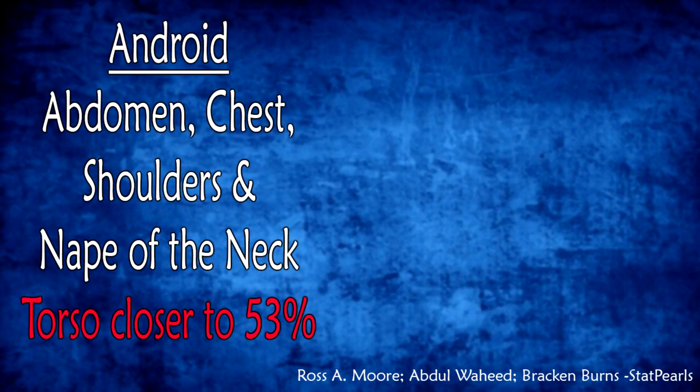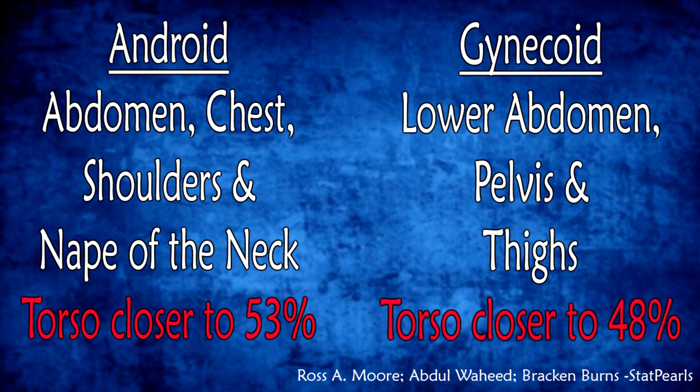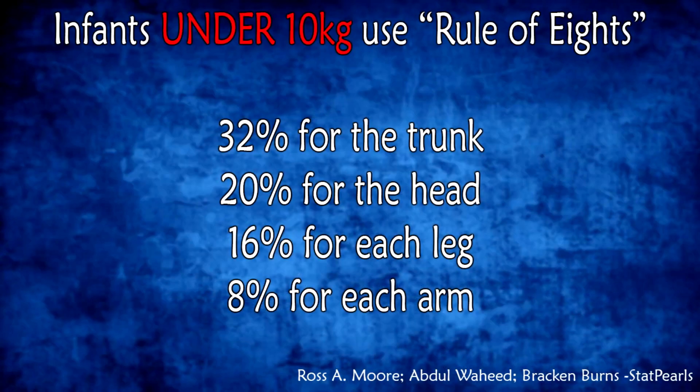Android-shaped obese patients, who distribute their adipose tissue in their abdomen, chest, shoulders, and the nape of the neck, have a torso closer to 53%, whereas gynecoid-shaped patients, who distribute their adipose tissue in the lower abdomen, pelvis, and thighs, have a torso closer to 48%. In infants that weigh less than 10 kilograms, the Rule of Eights makes better approximations. This rule dictates approximately 32% total body surface area for the trunk, 20% for the head, 16% for each leg, and 8% for each arm.